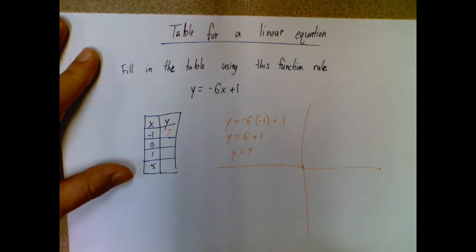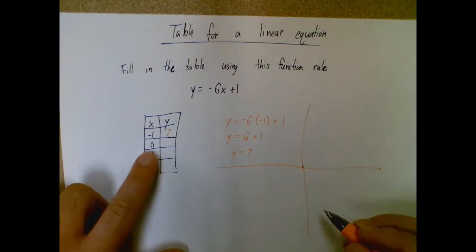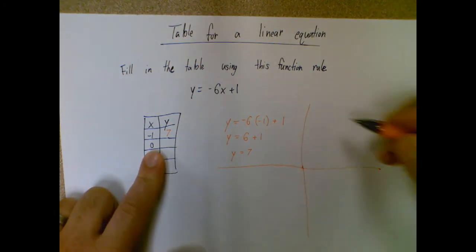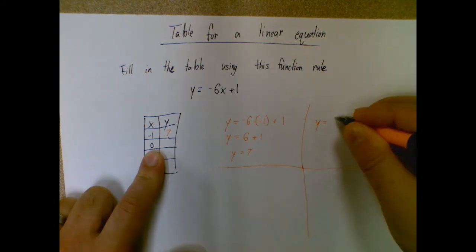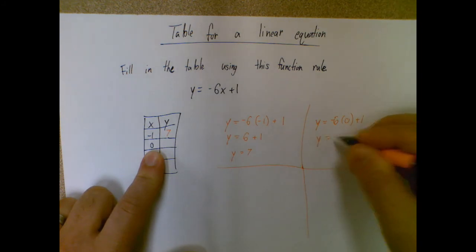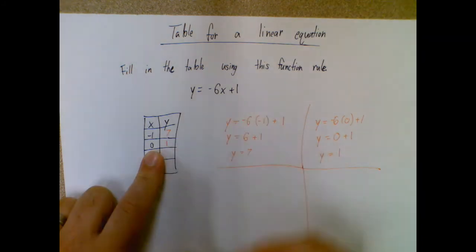All right, I'm going to end up doing this four times. So I'm going to do it again. But instead of negative one, I'm going to plug in zero for x. So y equals negative six times zero plus one. Anything times zero is zero, bring down the plus one, zero plus one is one. So I'll add that in my zero row.